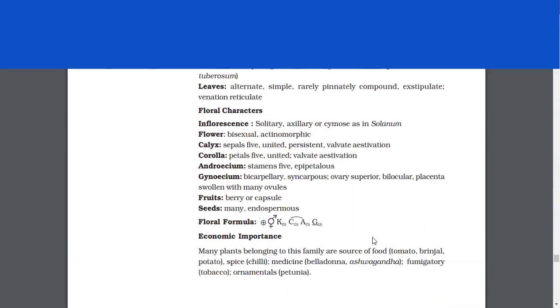Floral characters. Inflorescence. Solitary, axillary or cymose as in Solanum. Flower bisexual, actinomorphic. Calyx, sepals 5, united, persistent, valvate estivation. Corolla. Petals 5, united, valvate estivation.